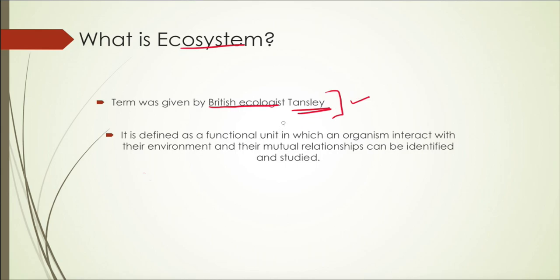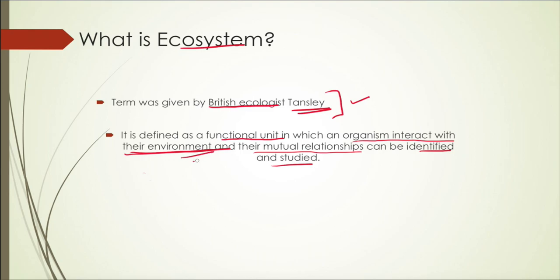There can be different definitions of ecosystem. But according to a functional unit perspective, it is basically a functional unit in which organisms interact with their environment and their mutual relationships can be identified and studied. In simple terms, the environment is a place where we interact — it can be your physical environment, your air, your land, your water — anything around us is called environment.